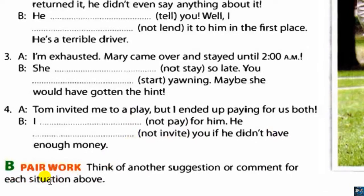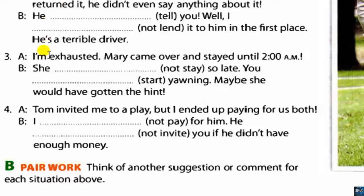Part B: Think of another suggestion or comment for each situation above. You will be speaker B for numbers one through four — giving your own suggestion or advice. This is pair work between you and a friend, so practice giving the advice.